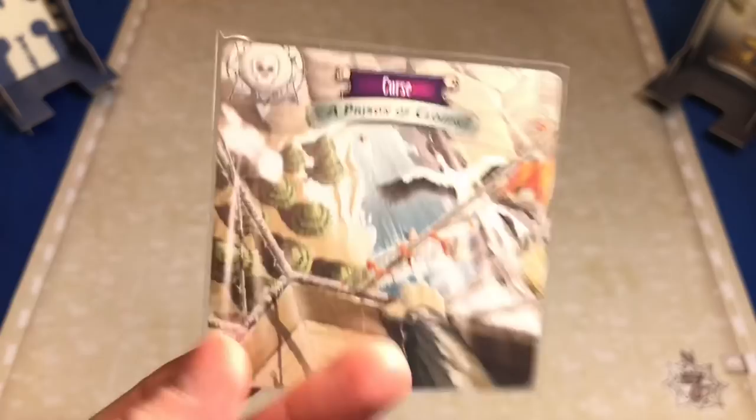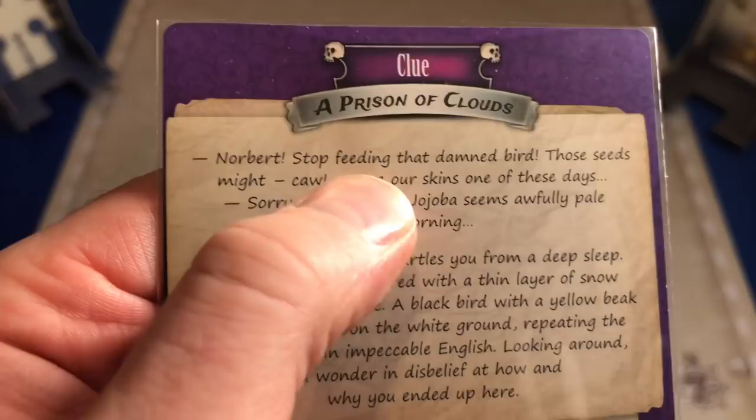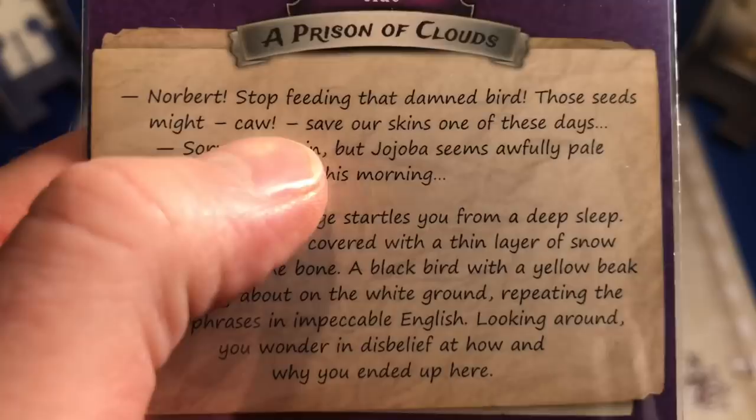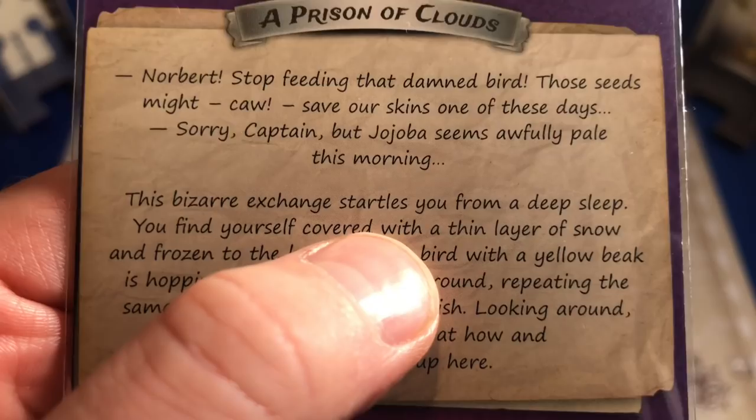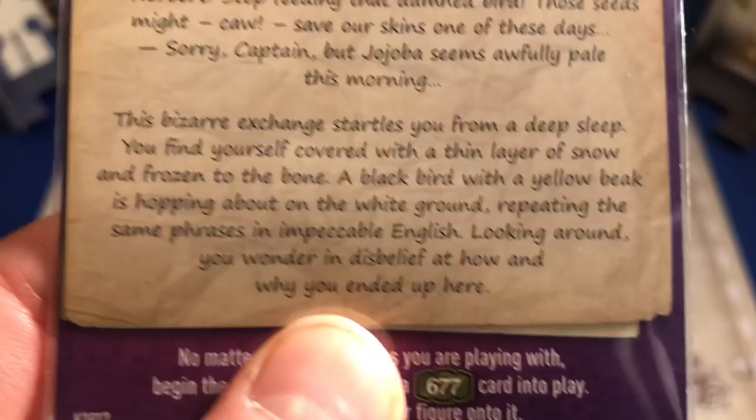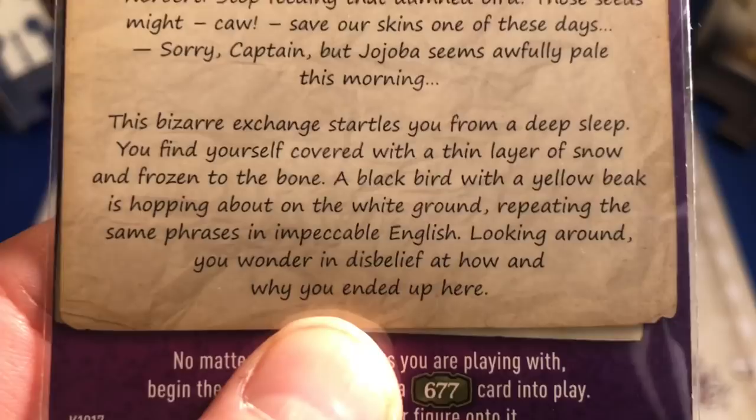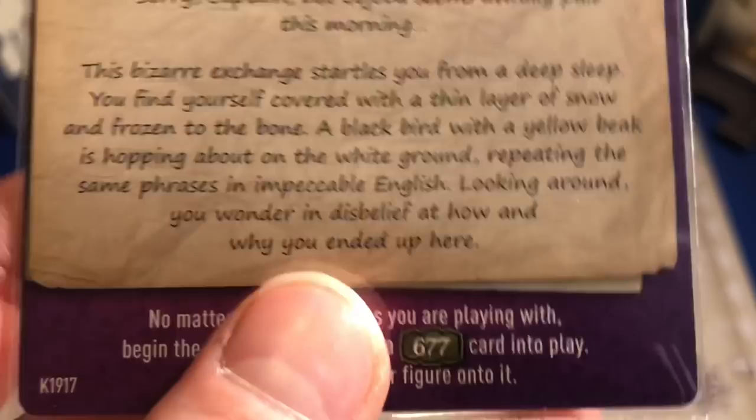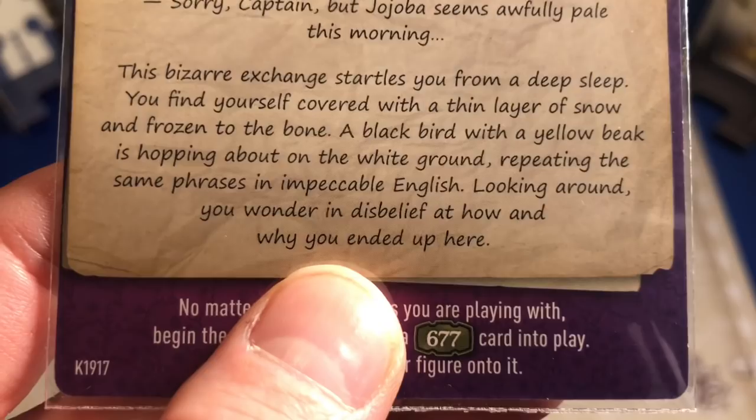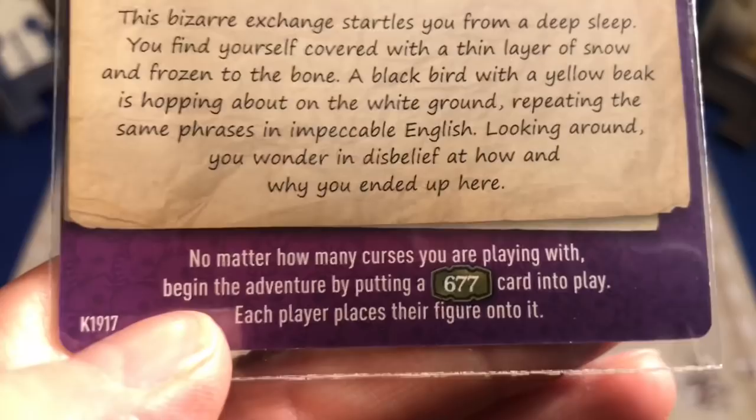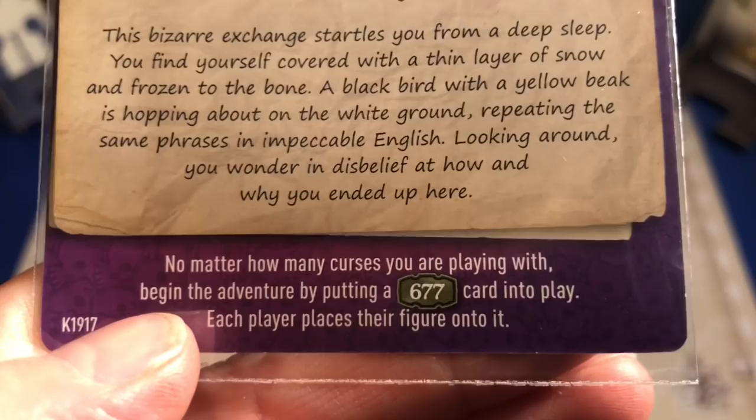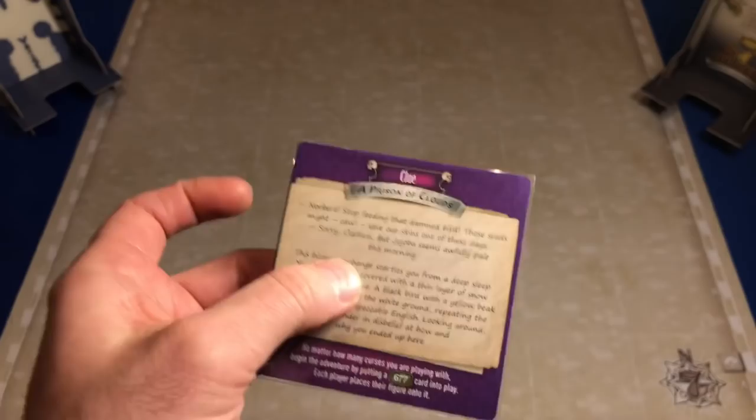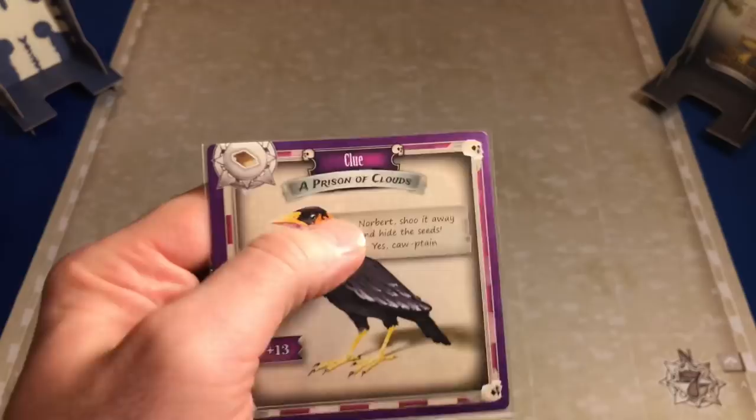Our intro states, a prison of clouds. Norbert, stop feeding that damn bird. Those seeds might save our skins one of these days. Sorry, Captain, but Jojoba seems awfully pale this morning. This bizarre exchange startles you from a deep sleep. You find yourself covered with a thin layer of snow and frozen to the bone. A black bird with a yellow beak is hopping about on the white ground, repeating the same phrases in impeccable English. It says at the bottom, begin the adventure by putting a 677 card into play. Each player places their figure on it.